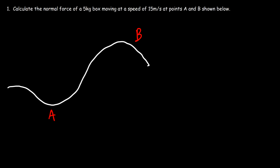Calculate the normal force of a five kilogram box moving at a speed of 15 meters per second at points A and B. Once it reaches point A, what is the normal force, and what about at point B? The normal force is going to be larger at A, because not only does the ground have to support the weight of the box, but it has to cause the box to turn upward. At B it's going to be easier because the box will just fall off.